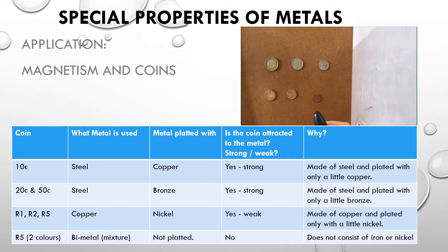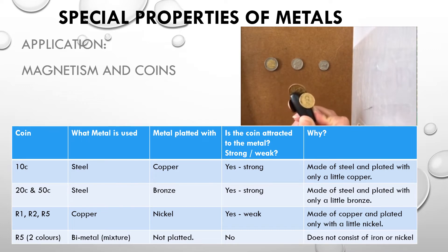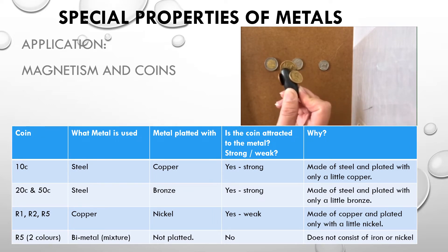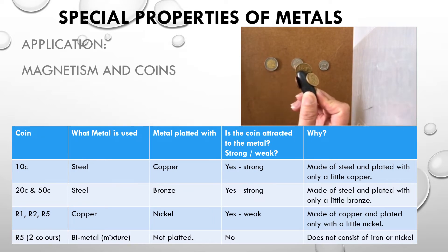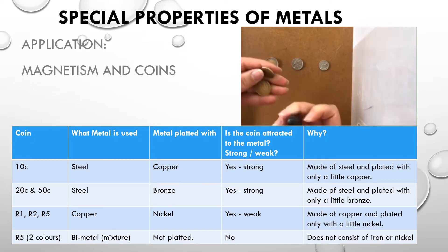Using a magnet, the 10, 20, and 50 cent coins get stuck — and quite hard. You can shake them and they do not fall off. This is because they're made of steel, and steel contains iron, which is very magnetic. To remove them I actually have to force them off.